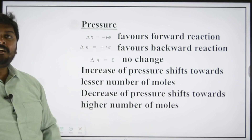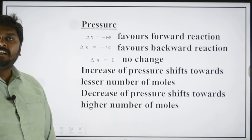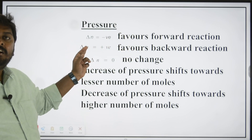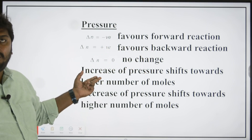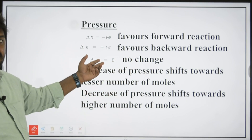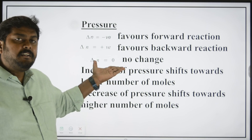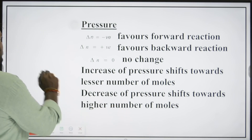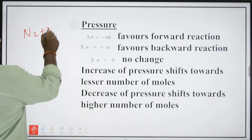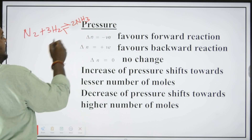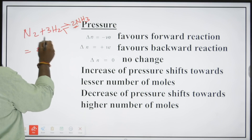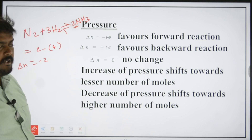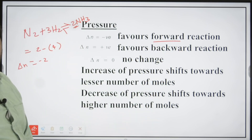Let me repeat: pressure depends on del n — change in number of moles in the equation. Del n negative favours forward reaction. Del n positive favours backward reaction. Del n zero means no change in pressure. Increase of pressure favours lesser number of moles; decrease of pressure favours higher number of moles. Taking the formation of ammonia: you have 4 moles of reactants minus 2 moles of product, so del n is negative. If you apply pressure to this equation, it favours the forward reaction.